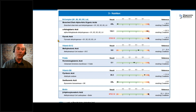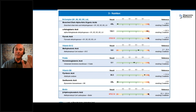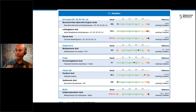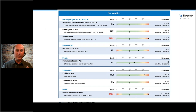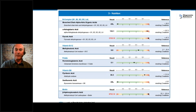If we all waited until we fully understood this test to order it, no one would ever order it. So the next time someone asks you — the most important nutrient for all life on earth — you're going to say: B vitamins. And the next time you get this test back, look at this section and prescribe B vitamins. You'll see all these amazing things happen.